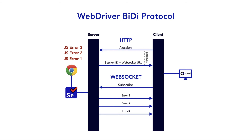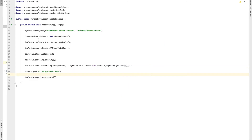If you want JavaScript errors only for a particular page, you can subscribe, collect all the JavaScript errors, and then unsubscribe at any time. This is a feature available in Selenium 4, and it is very difficult to achieve this kind of communication using HTTP protocol. That is the reason Selenium 4 uses WebSocket protocol for bidirectional communication. Now we will see how to use that through code.